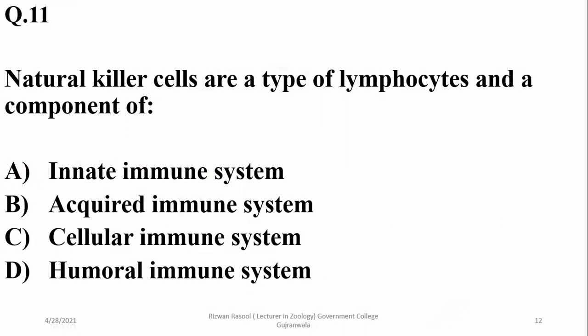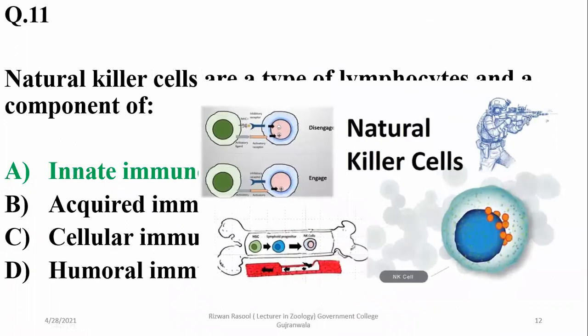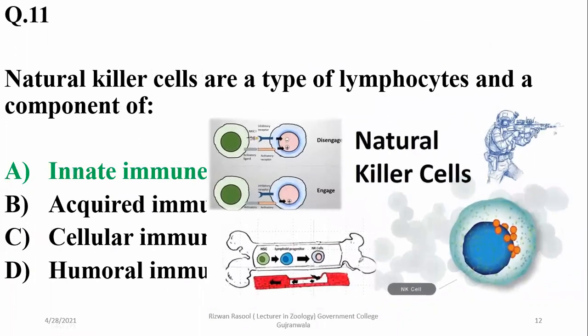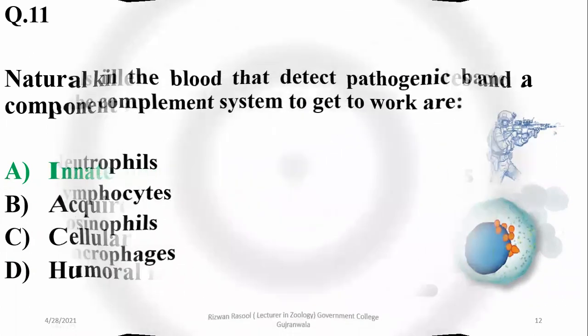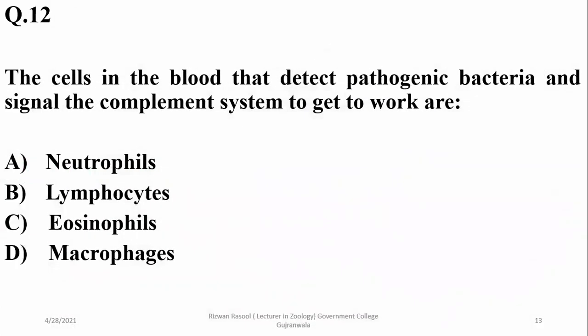Question 11: natural killer cells are a type of lymphocyte and a component of the second defense line or innate immune system. They are a type of lymphocyte involved in the second defense line or innate immune response. The cells in the blood that detect pathogenic bacteria and signal the complement system to get to work are macrophages.